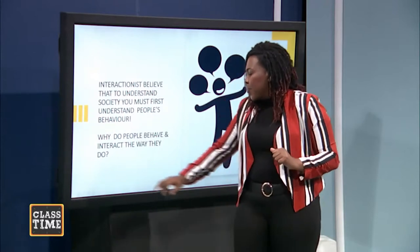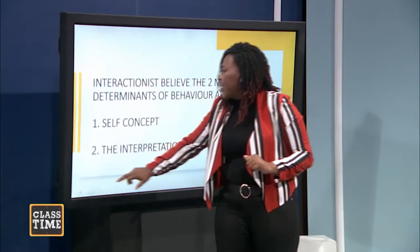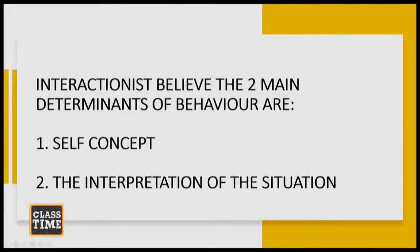The interactionists say to understand society, you must first understand why people behave in the manner that they do. Based on their research, they have found that there are two things that determine how you behave. One is your self-concept, and the second is your interpretation of the situation. What determines how humans will interact and what you will do? One is your self-concept, and the second is your interpretation of the situation. Now let's start with self-concept.